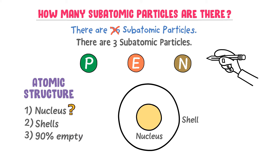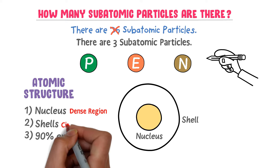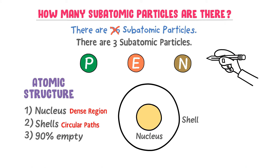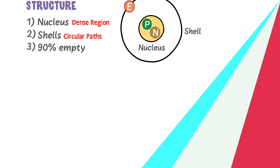The nucleus is the small, central, and dense region of an atom. Shells are the circular paths around the nucleus. Subatomic particles like protons and neutrons stay in the nucleus and do not leave it. Electrons are constantly revolving around the nucleus, just like planets revolve around the sun.